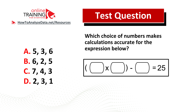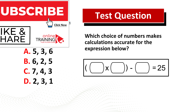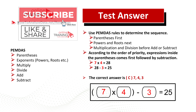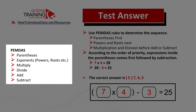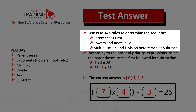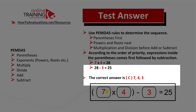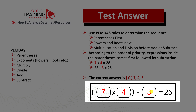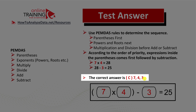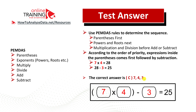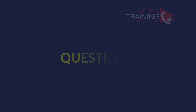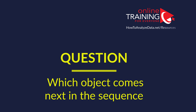To get to the solution you need to remember PEMDAS, which stands for parentheses, exponents, multiply, divide, add, and subtract. Parentheses first, powers and roots next, then multiplication and division before adding and subtracting. In this case we need to multiply 7 by 4 first, then subtract 3 to get the result of 25. The correct solution is choice C: 7 4 3. If you need more practice problems, check out my ebook in the description section of this video.